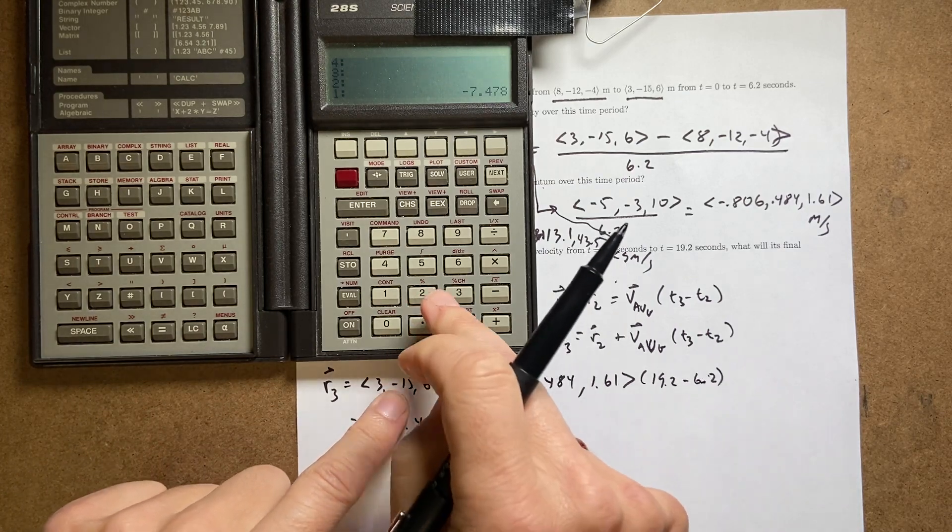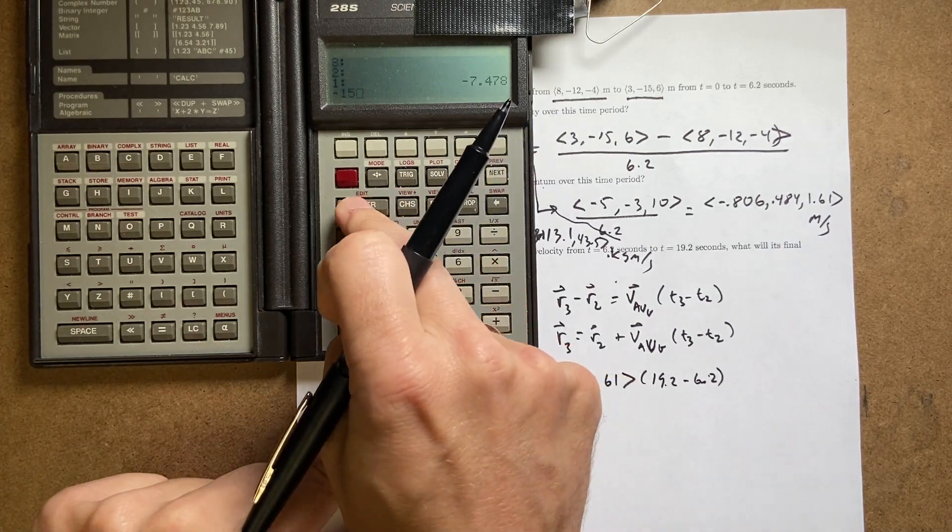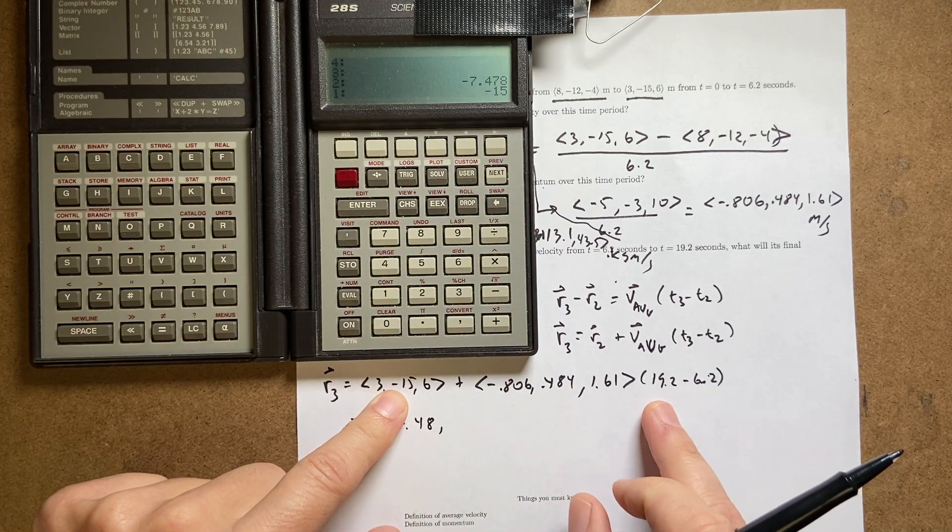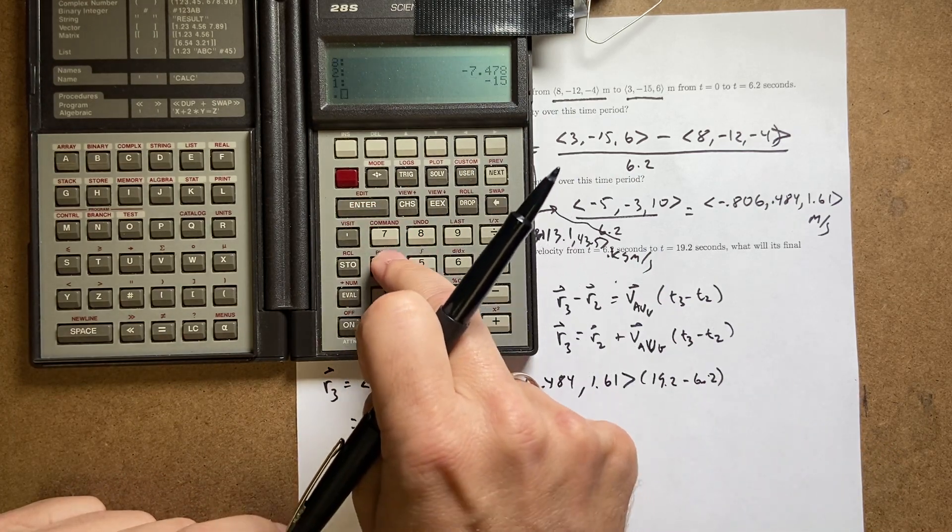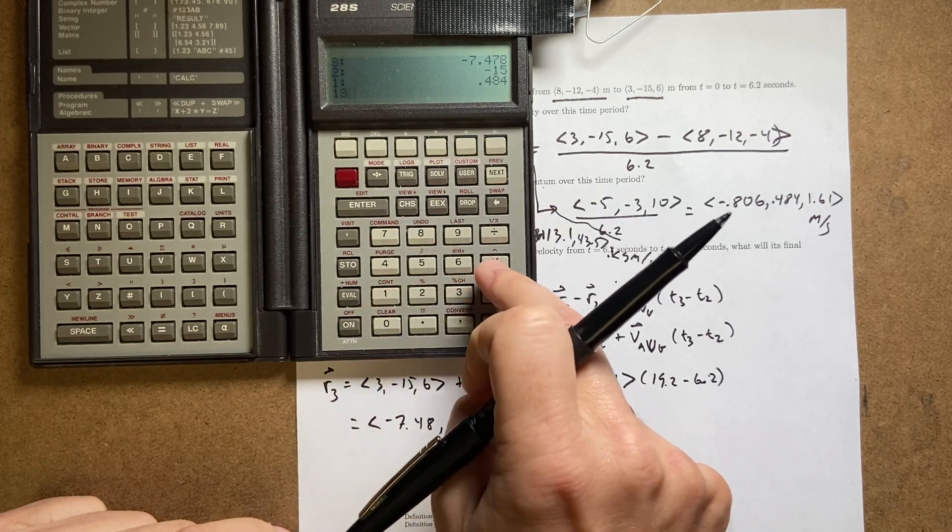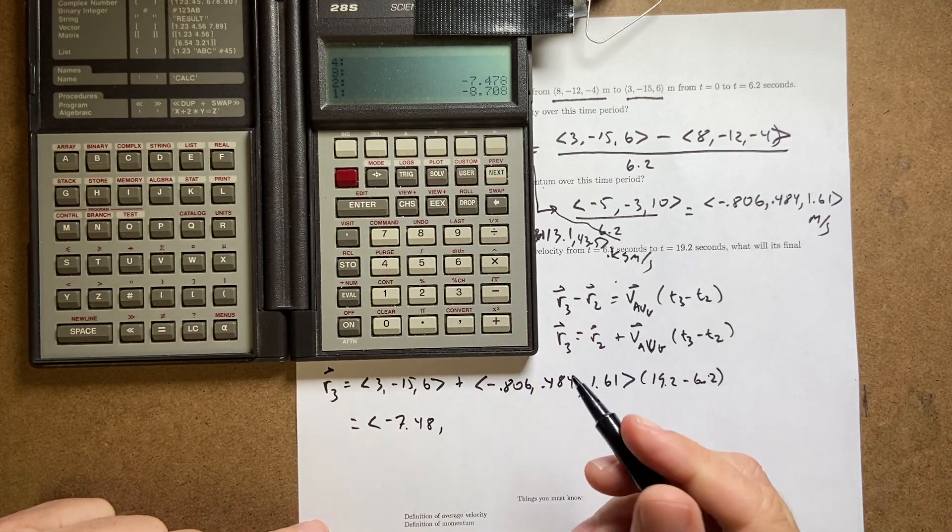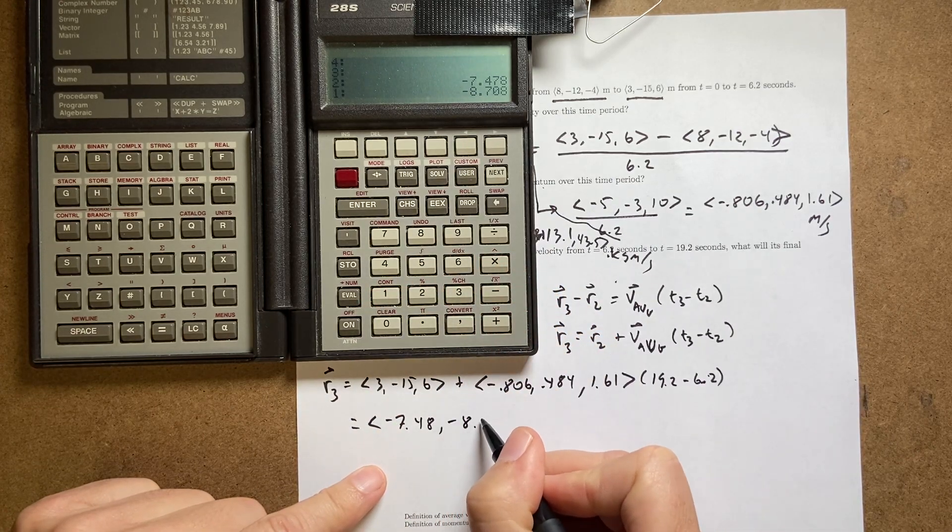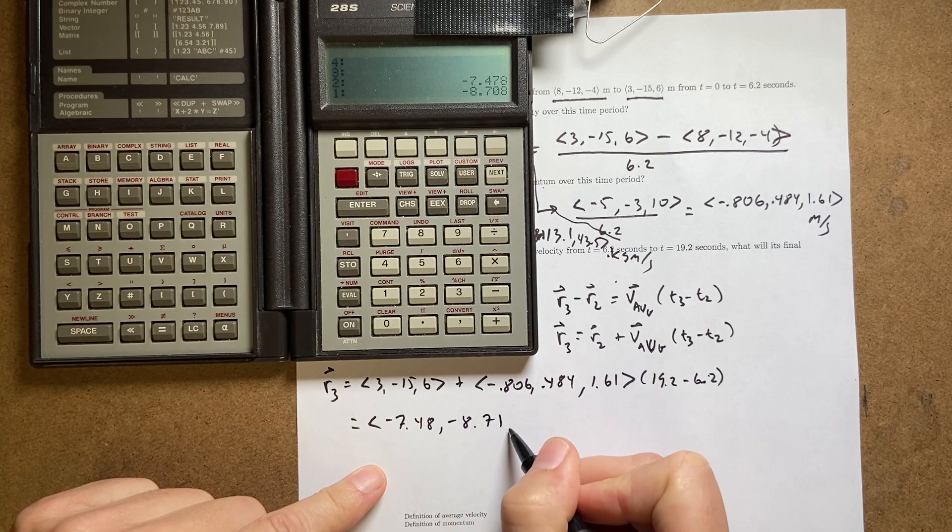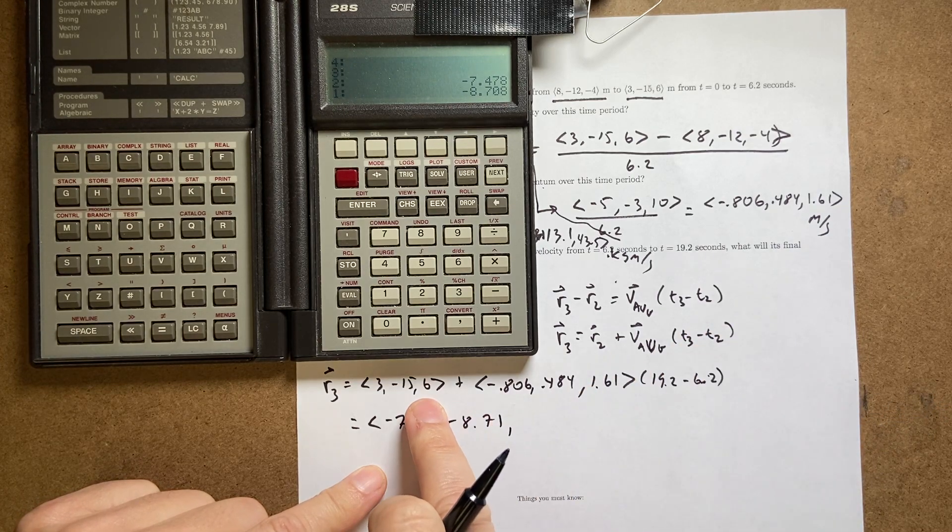Now I'm going to do my y. So I'll start off with negative 15. And then I have that same 13, and I have 0.484, enter, 13 times, plus negative 8.71.